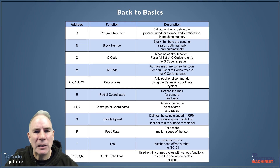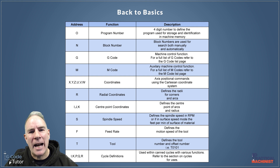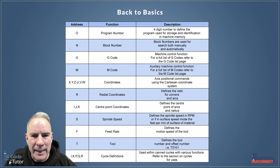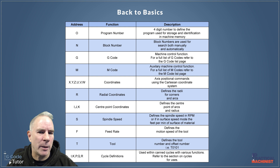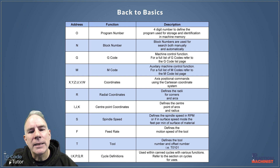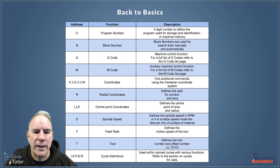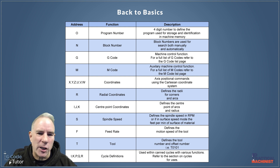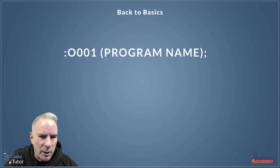I want to start off by looking at all the different functions available for G-Code. As you can see here, we've got program numbers, block numbers, G-Code, M-Code, coordinates, radio coordinates, radial coordinates, center point coordinates, spindle, feed rate, tools, and cycle definitions. So let's have a look at all of these and what they mean.